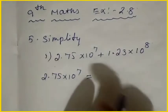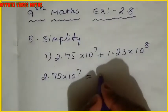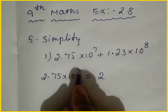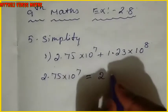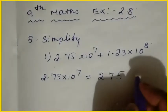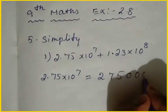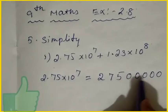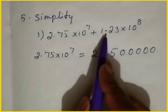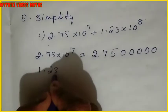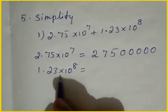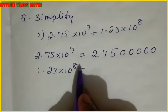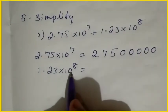For the first part, 2.75 into 10 power 7: write 2 first, then after the decimal we have 2 digits. We want 7 digits total for 10 power 7, so counting out 7 digits: 2, 7, 5, then zeros to fill positions 4 through 7. For the second term, 1.23 into 10 power 8, we place 2 digits after the decimal.